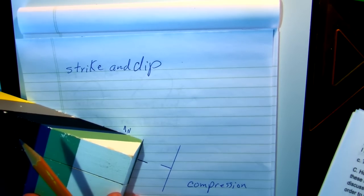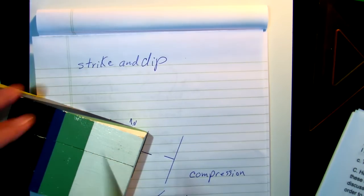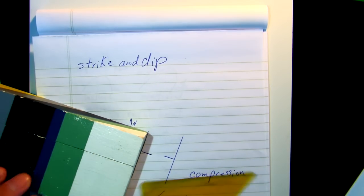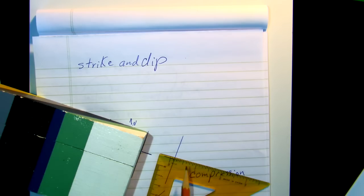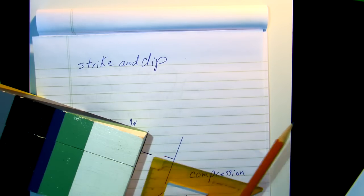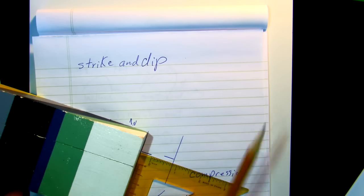Notice which way the dip is going. Dip is always at 90 degrees, right angles, to the strike. And going down inside the earth. Dipping down inside the earth. If there are any questions about this, you should be able to refer to your textbook.